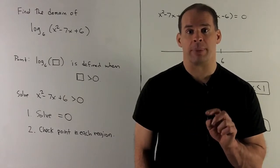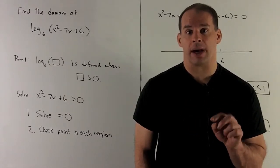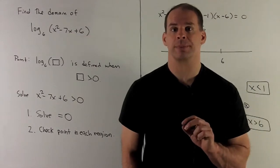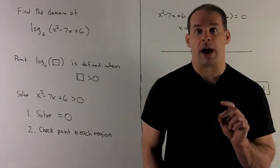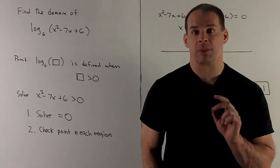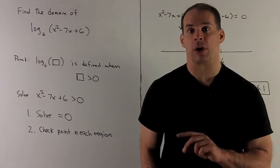What we're putting in the box here is x squared minus 7x plus 6. So the problem is going to be find where x squared minus 7x plus 6 is greater than 0.